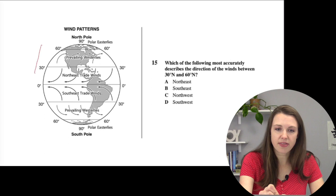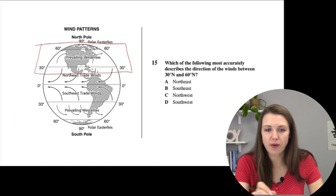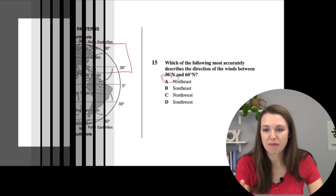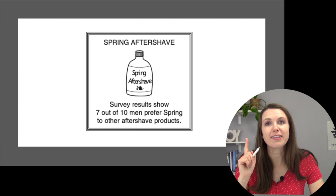Question fifteen: which most accurately describes the direction of winds between 30 degrees north and 60 degrees north? Looking at the map in that zone, the arrows show winds moving northeast. So the answer is northeast.